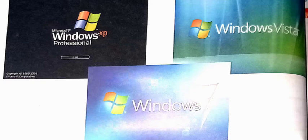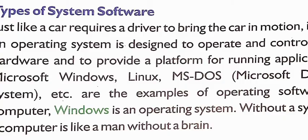Windows 7 is an example of system software. Just like a car requires a driver to bring the car in motion, in the same way an operating system is designed to operate and control the computer hardware and to provide a platform for running application software. Microsoft Windows, Linux, and MS-DOS — that means Microsoft Disk Operating System — are examples of operating system software. Without system software, a computer is like a man without a brain.